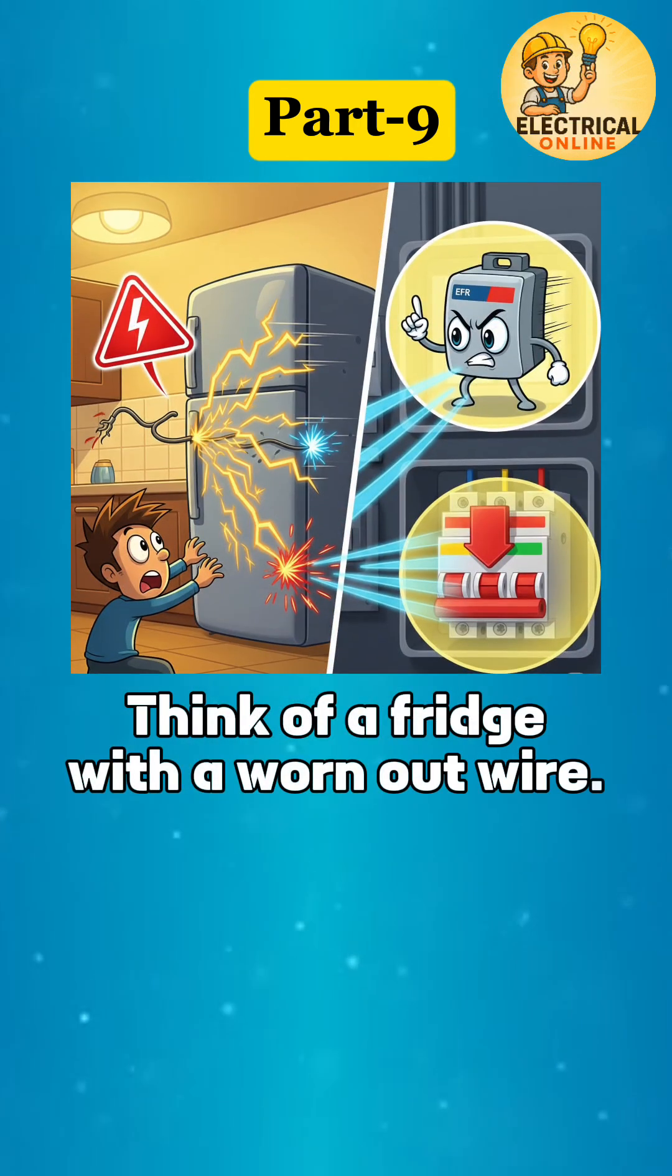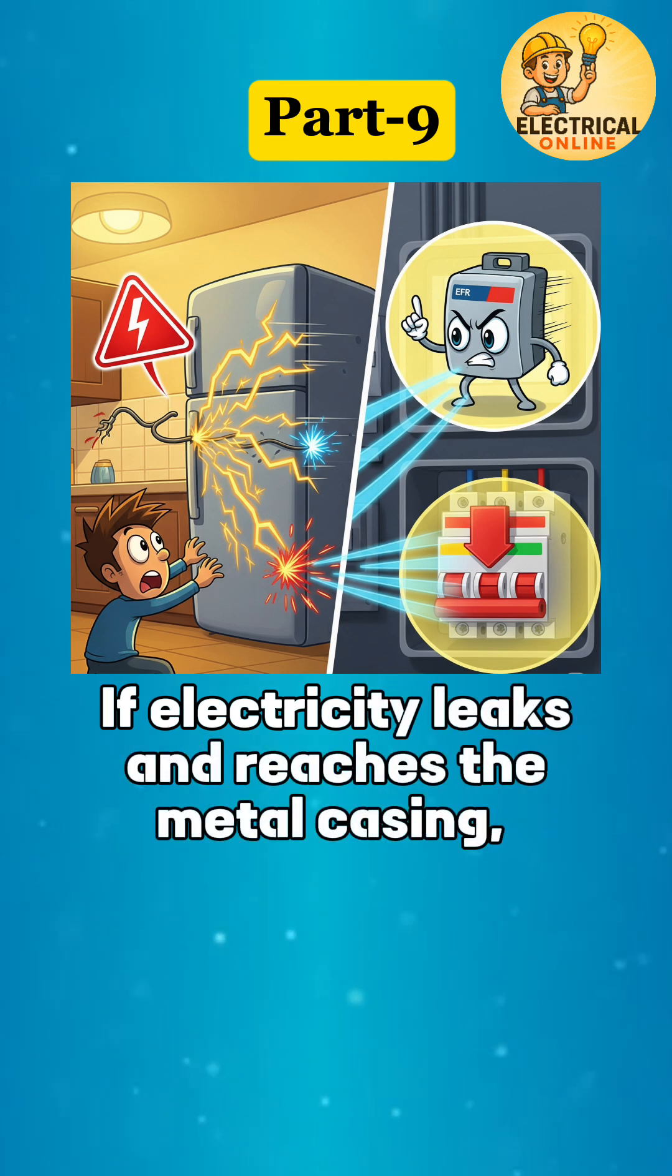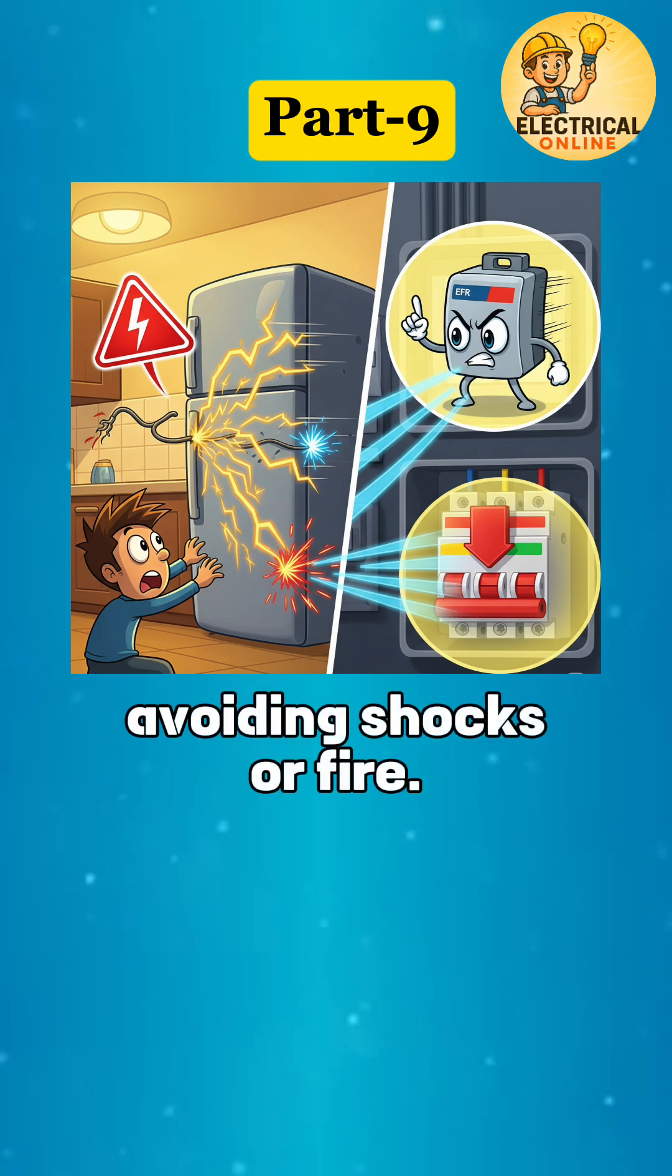Think of a fridge with a worn-out wire. If electricity leaks and reaches the metal casing, the EFR detects the fault instantly and shuts the power, avoiding shocks or fire.